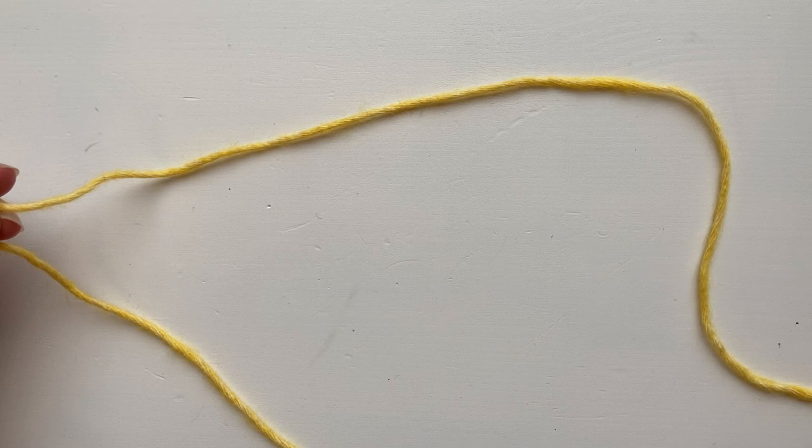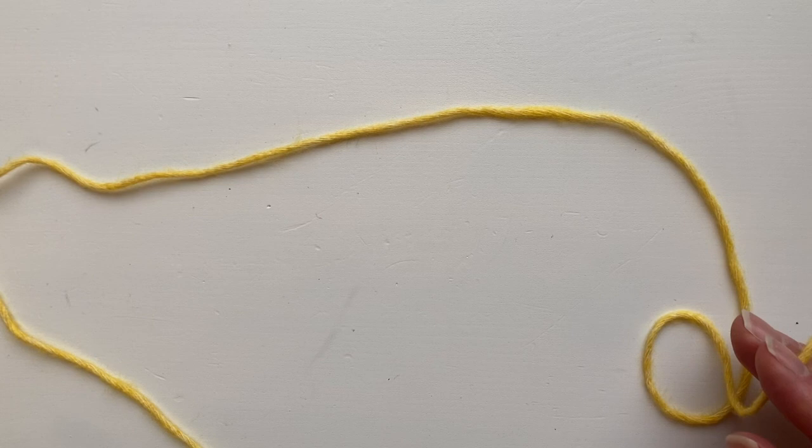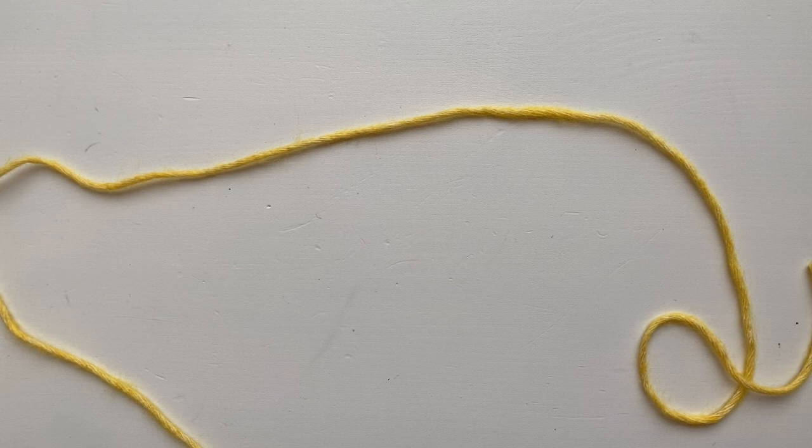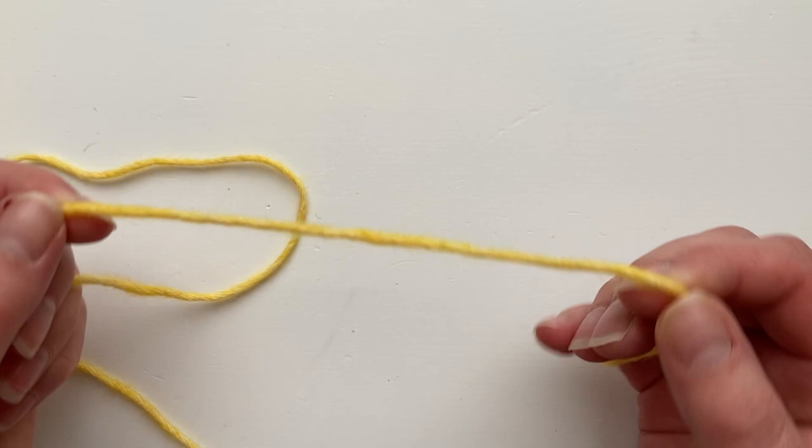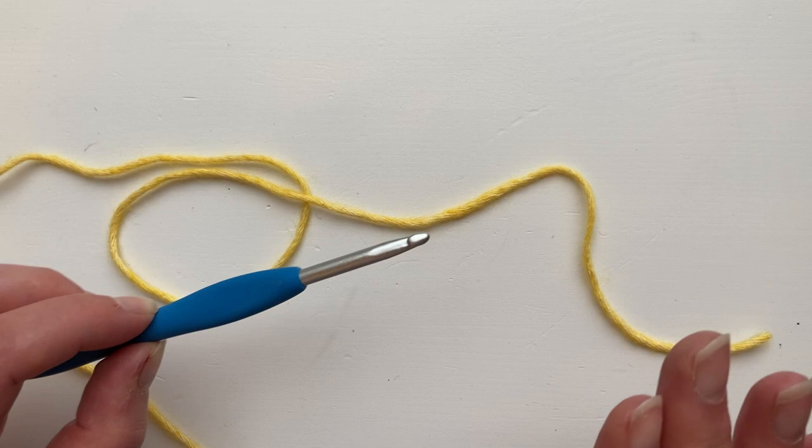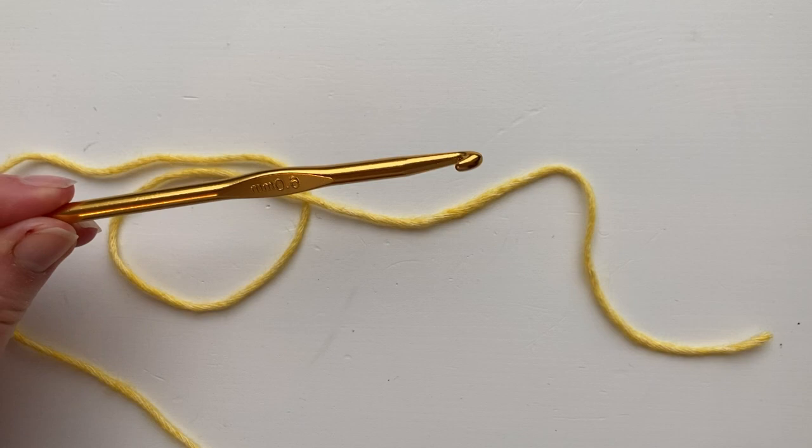So we're going to first of all look at our hook and do a little bit of maths. Now I've got some Aran yarn here or worsted weight and it requires a 5mm hook. Now with any cast on I always recommend that you move up a hook size just to create an extra bit of flexibility. So here we've got a 6mm hook. It's 6mm because the diameter is 6mm. That means it's 6mm across from here to here.